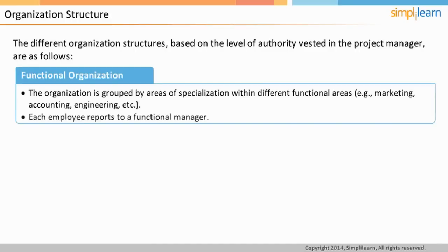Each employee typically reports to a functional manager. In such types of organization, projects are normally undertaken within the department itself. If a project requires any assistance from another department, the request moves from the head of the requesting department to the head of the concerned department. The team members do their normal departmental work in addition to the project work.